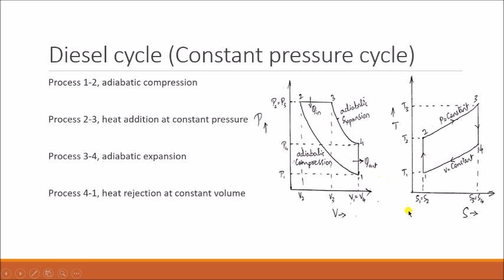During heat rejection, the temperature and entropy reduce to T1 and S1 simultaneously. Whatever air was there has attended the initial condition — the same condition it had at the beginning of the cycle. The same air is then used to repeat the cycle. This is the diesel cycle.